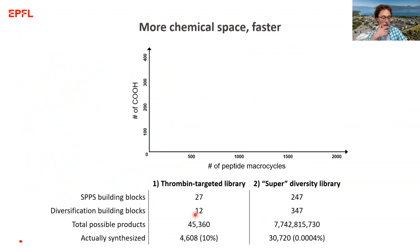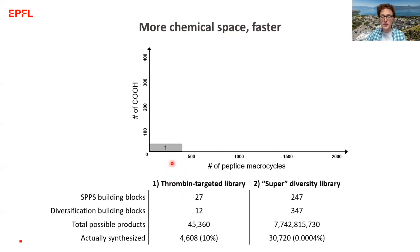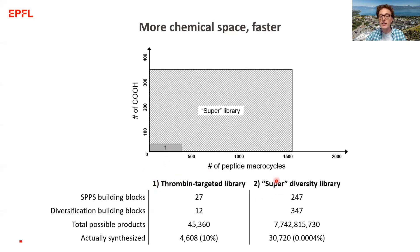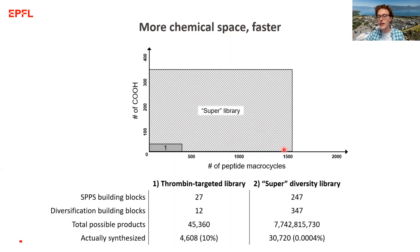To compare the libraries: the thrombin-targeted library used 384 peptide macrocycles reacted with 12 different carboxylic acids — all combinations. For the super-diversity library, we're making four times as many peptide macrocycles (1,500) reacted with a total of 350 carboxylic acids, accessing a much larger region of chemical space. Importantly, we're not making all combinations because it's too many to handle; instead, we're sampling this chemical space by making a subset of these combinations.